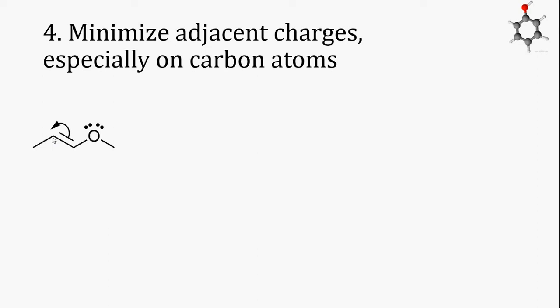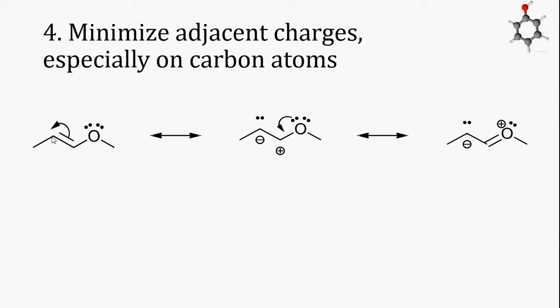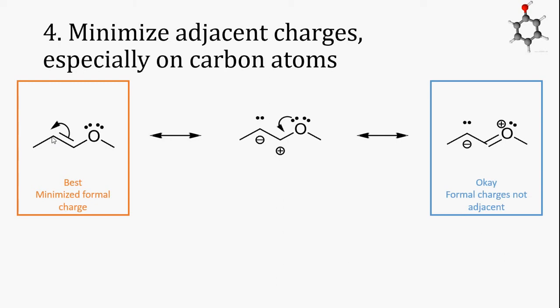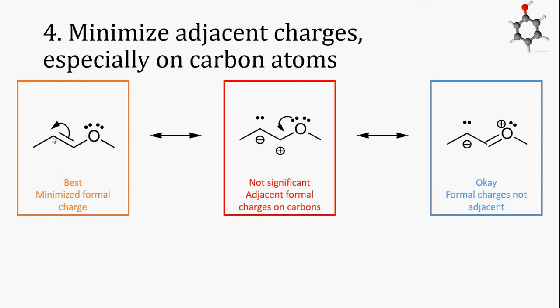We also want to make sure we minimize adjacent charges, especially on carbon atoms. Here's a molecule similar to the first one we looked at. We can use our knowledge of resonance patterns to draw resonance structures. We can take the electrons in the pi bond and move them towards the carbon atom on the left end of the pi bond, creating a resonance structure where that carbon atom has a lone pair and an anion, and the carbon atom closer to the oxygen has a positive charge. We can then take one of the lone pairs from oxygen and use it to form a new carbon-oxygen double bond. The structure on the left is the best structure because everything has an octet and there are no formal charges. The structure on the far right is an okay resonance structure because while everything has an octet, the formal charges are not adjacent to each other. The structure in the middle is not a significant resonance structure because it has adjacent formal charges on carbon atoms.